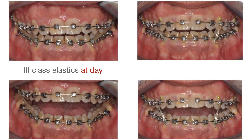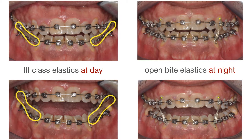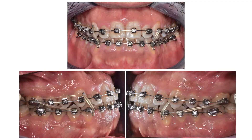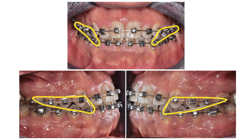At this point, you can see how we continue with third class elastics during daytime, but at night we ask the patient to wear open bite elastics to close the bite, going all around the upper and lower cuspids. At this point the elastics can be a bit heavier, such as 4 ounces. Once the bite has closed and the third class is solved, we ask the patient to wear third class intercuspidation elastics, which have a class 3 vector and an open bite vector, to prevent class 3 and open bite from relapsing while finishing the case.